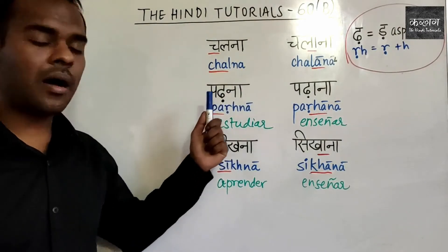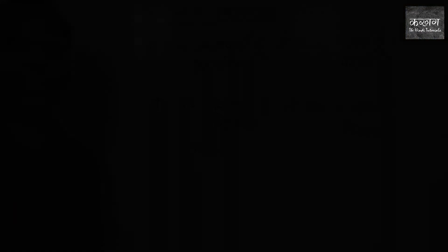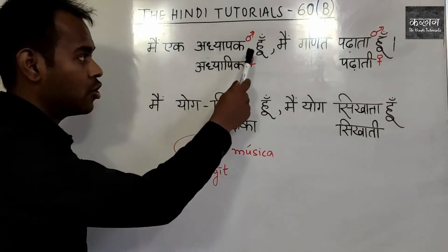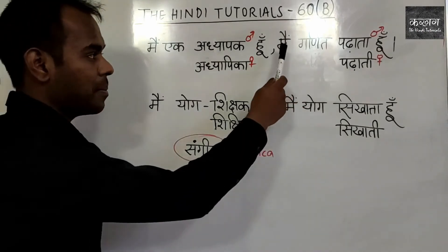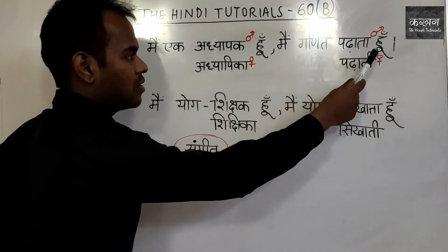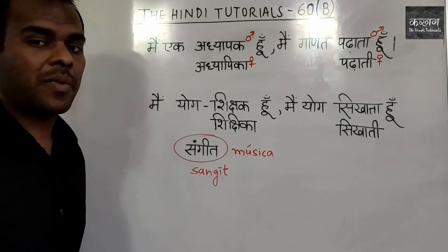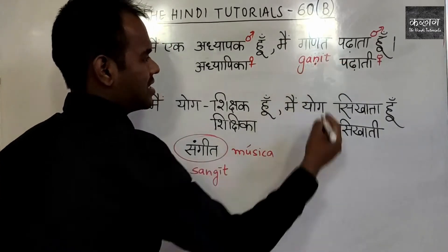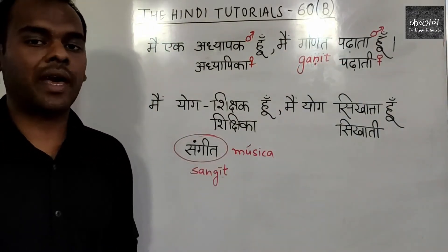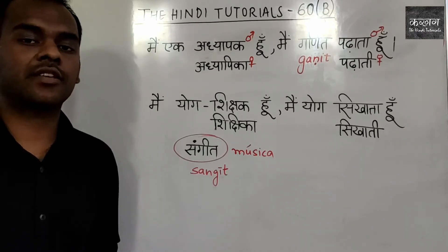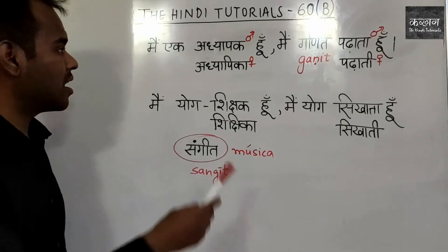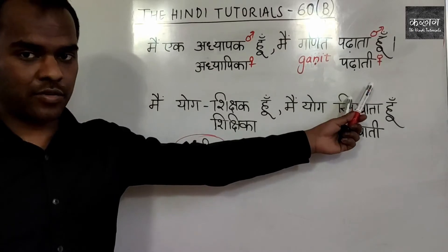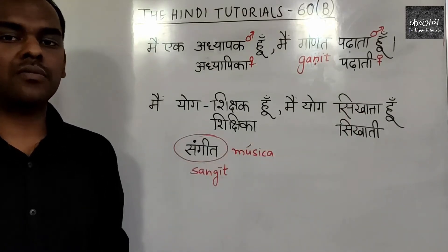Entonces: chalna, chalana; parhana, parhana; sikhana, sikhana. Mein ek adhyaapak hun — soy un profesor. Mein ganit padhata hun — yo enseño matemáticas. Ganit es matemáticas en hindi. Si es una mujer diría: mein ek adhyaapak hun, mein ganit padhati hun.